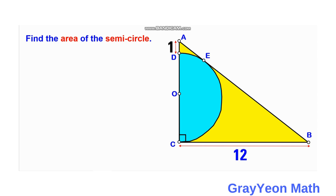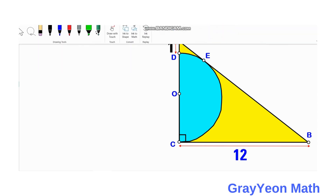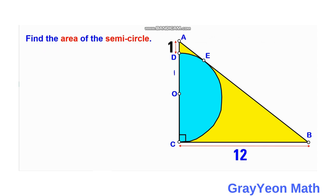To find the area of the semicircle we need to get the radius, which we label as R. We then draw a line from E to O. Since E is a point of tangency, this segment EO should be 90 degrees to the hypotenuse.